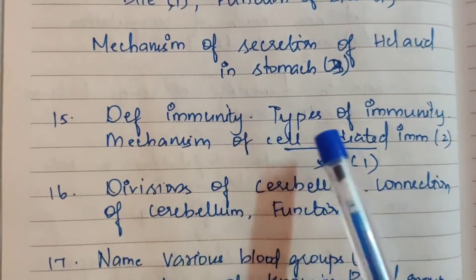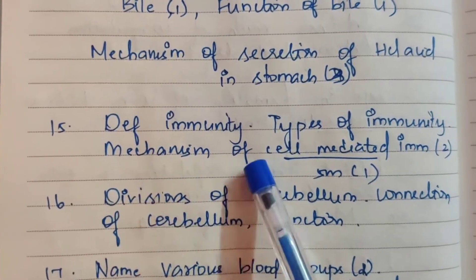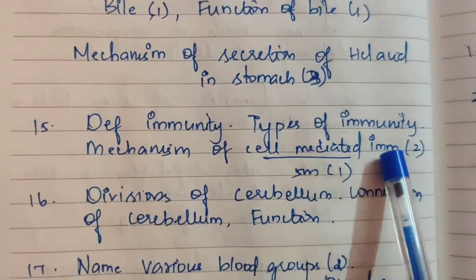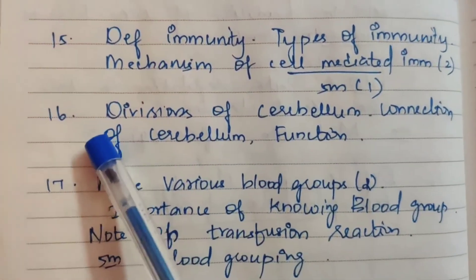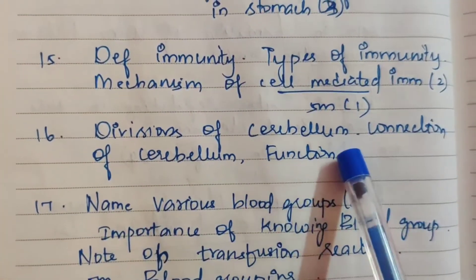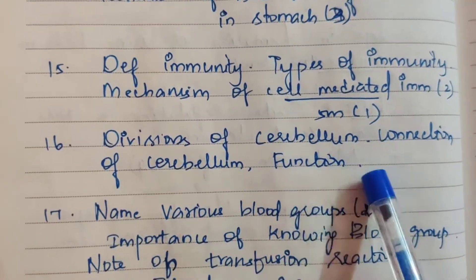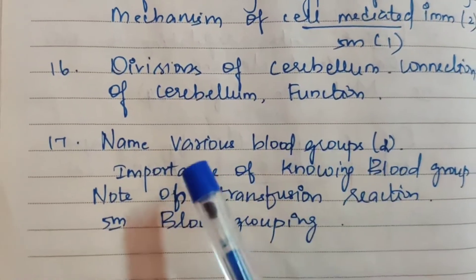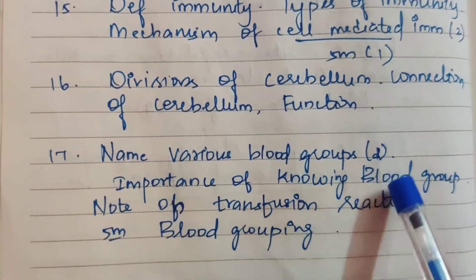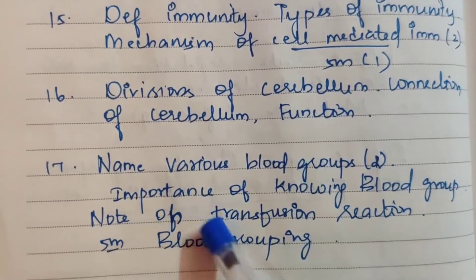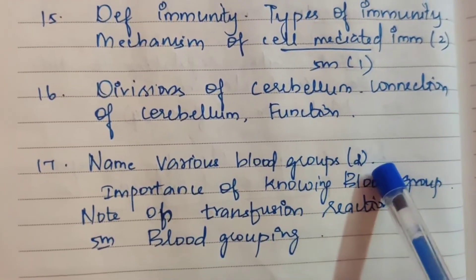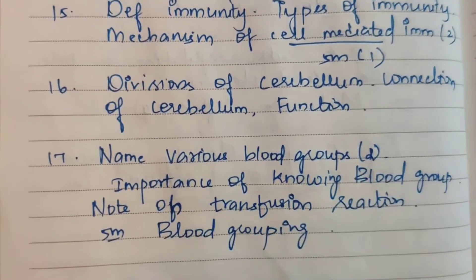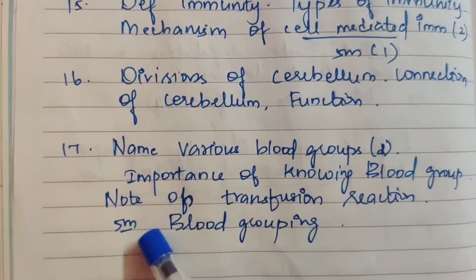Fifteenth question: Define immunity, types of immunity, mechanism of cell-mediated immunity — asked two times for 15 marks; cell-mediated immunity alone for 5 marks. Sixteenth: Divisions of cerebellum, connections of cerebellum and its function — 15 marks. Seventeenth: Name various blood groups, importance of knowing blood group, note on transfusion reaction — 15 marks; blood groups for 5 marks; Rh blood grouping also asked.